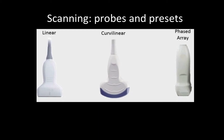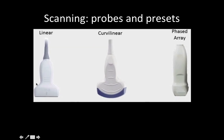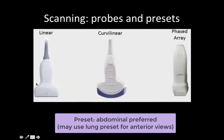To start off with, a brief word about probes and presets. For most of your lung scanning, either the curvilinear or the phased array probe should be used. The linear probe can be used if you are looking exclusively at the pleura, for example for pneumothorax, but otherwise will not have the depth to adequately visualize deeper lung artifacts. In terms of presets, the lung is traditionally scanned using the abdominal preset. Some newer machines may have a lung preset; however, this tends to eliminate a lot of the image manipulation that helps visualize solid organs. The lung preset may be used for anterior views and differentiating A versus B lines, but for dependent views and optimal visualization of solid organs, the abdominal preset is preferred.